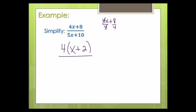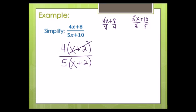I can't factor what's left in the parentheses, so I go to the bottom and do the same thing. There's a 5 in common in both terms. Dividing 5x plus 10 by 5: 5x over 5 is x, and 10 over 5 is 2. So I have 5 times x plus 2. I can't factor x plus 2 anymore. Now I just cancel out anything in common — I see x plus 2 and x plus 2. I cross out those groups because they're exactly the same. 4 fifths does not reduce, so my final answer is 4 fifths.